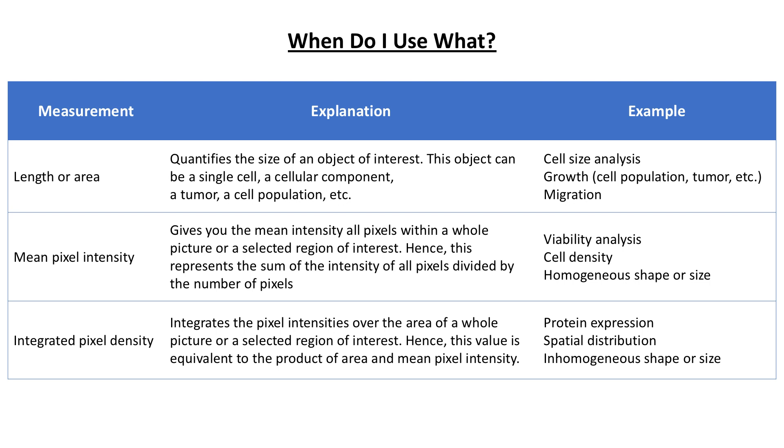Hence, mean pixel intensity can be used for example to determine tissue viability, cell death or cell density.